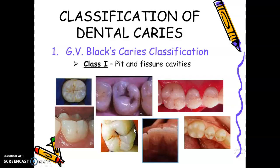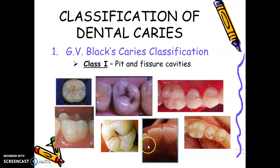Can we find Class 1 caries in anterior teeth? Are there pit and fissures in anterior teeth? Yes. You can have pit caries on lateral incisors — very common in maxillary lateral incisors — and sometimes on the maxillary central incisors also.